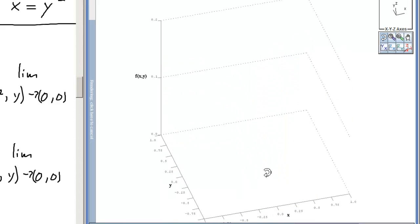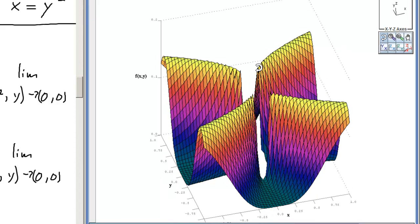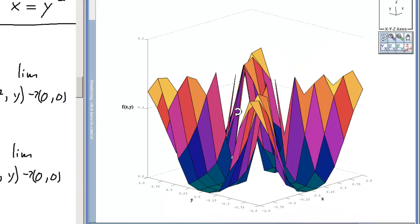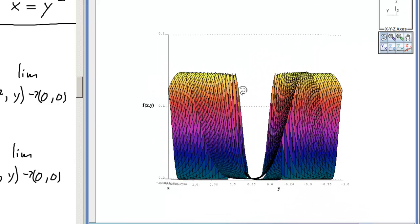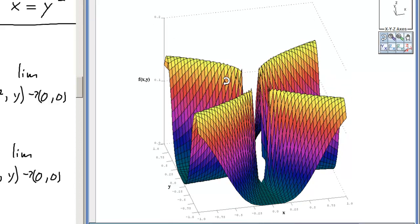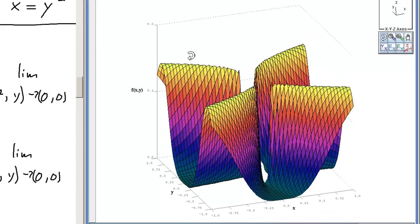All the other paths seem to lead toward the origin at zero. But, if we travel along this parabola, we stay at what looks to be a little greater than 0.01. Right? And that's one eighth.